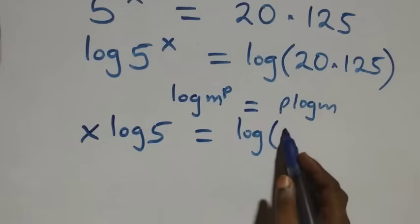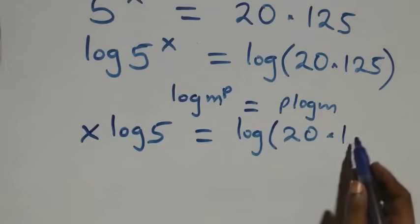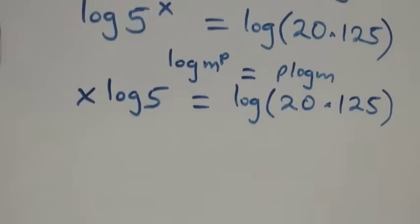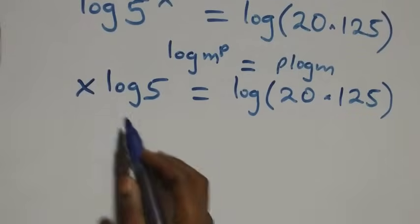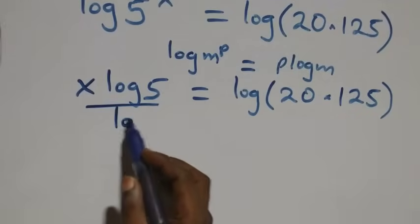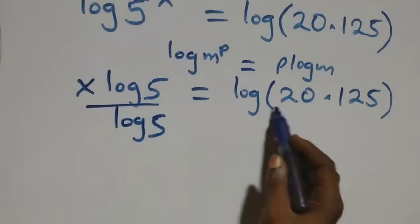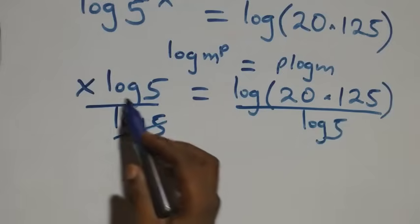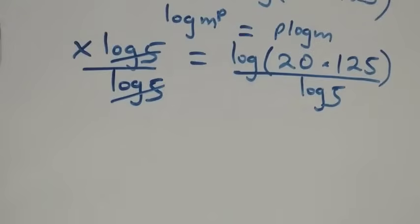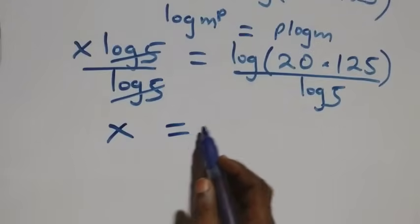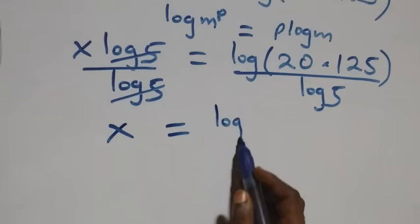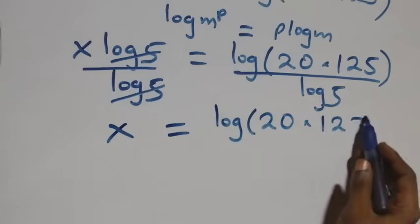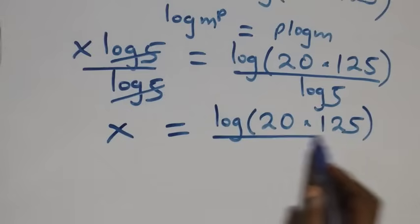The next step: we divide both sides by log five. Dividing this side by log five and also this side by log five, log five cancels on the left, and we are left with x equals to log twenty times one hundred and twenty-five over log five.